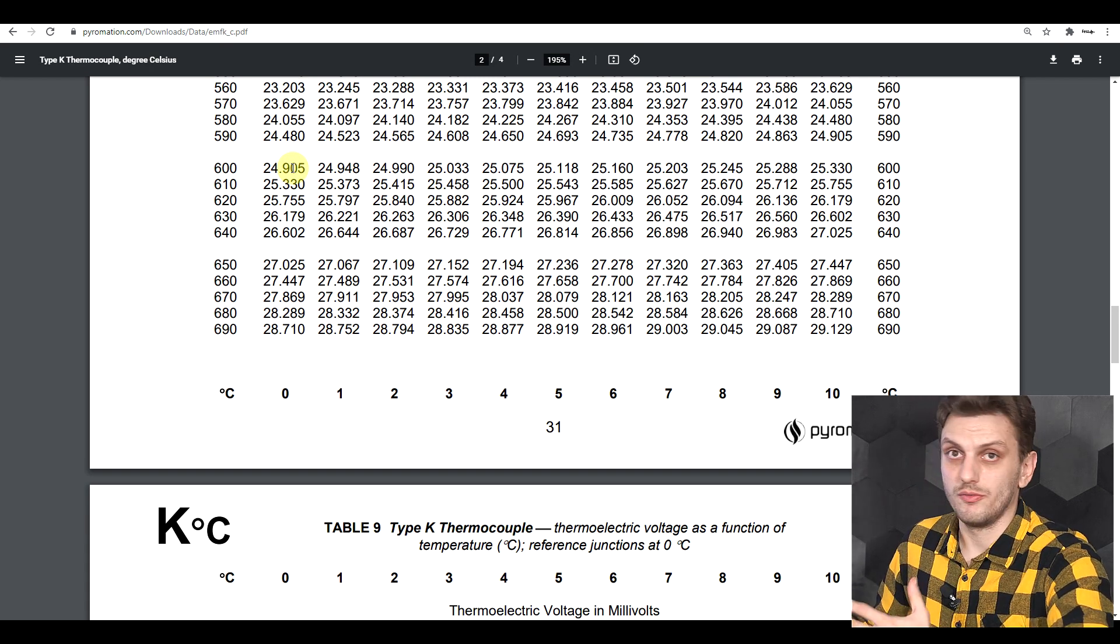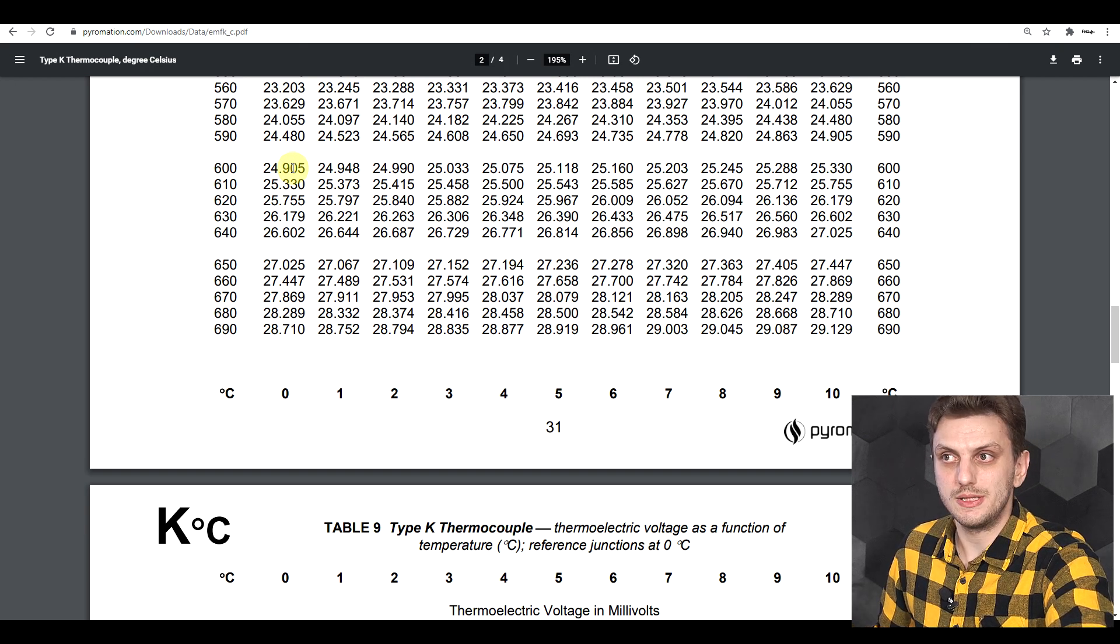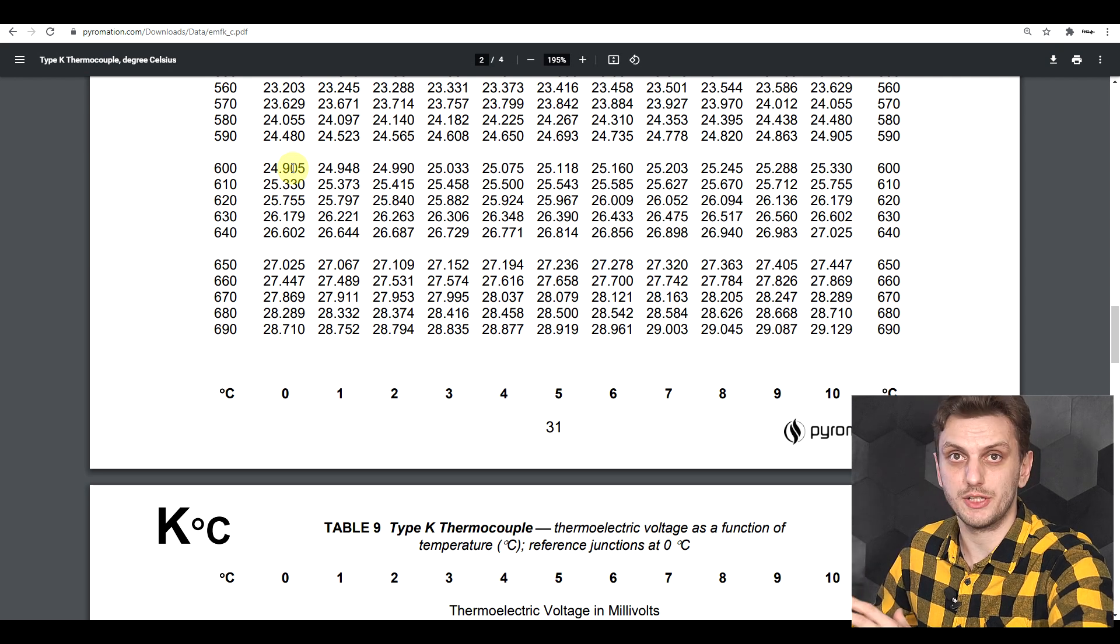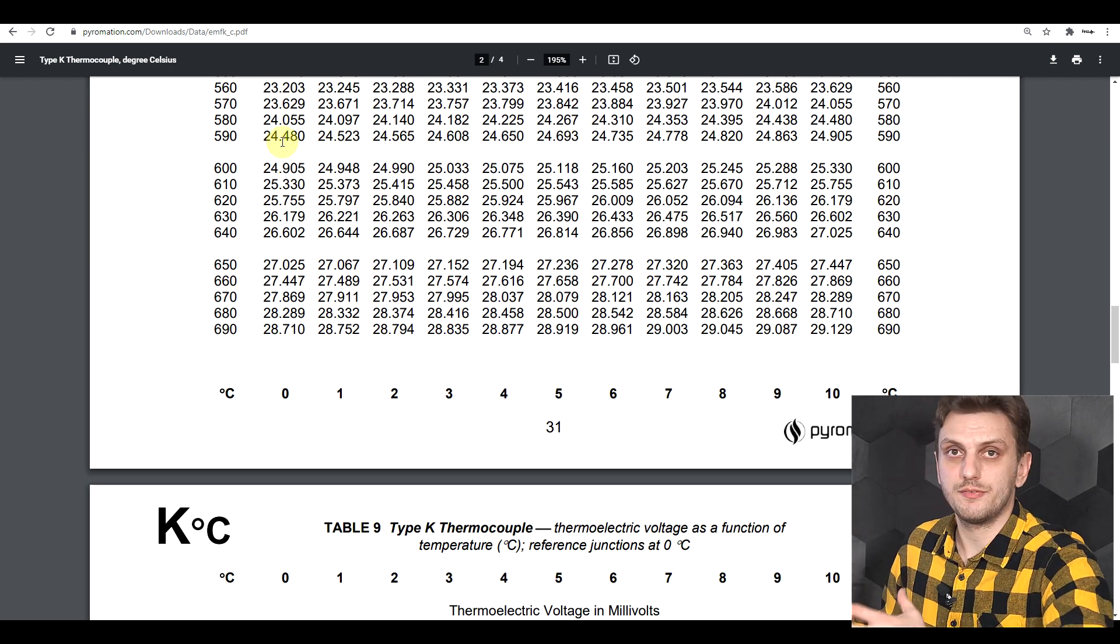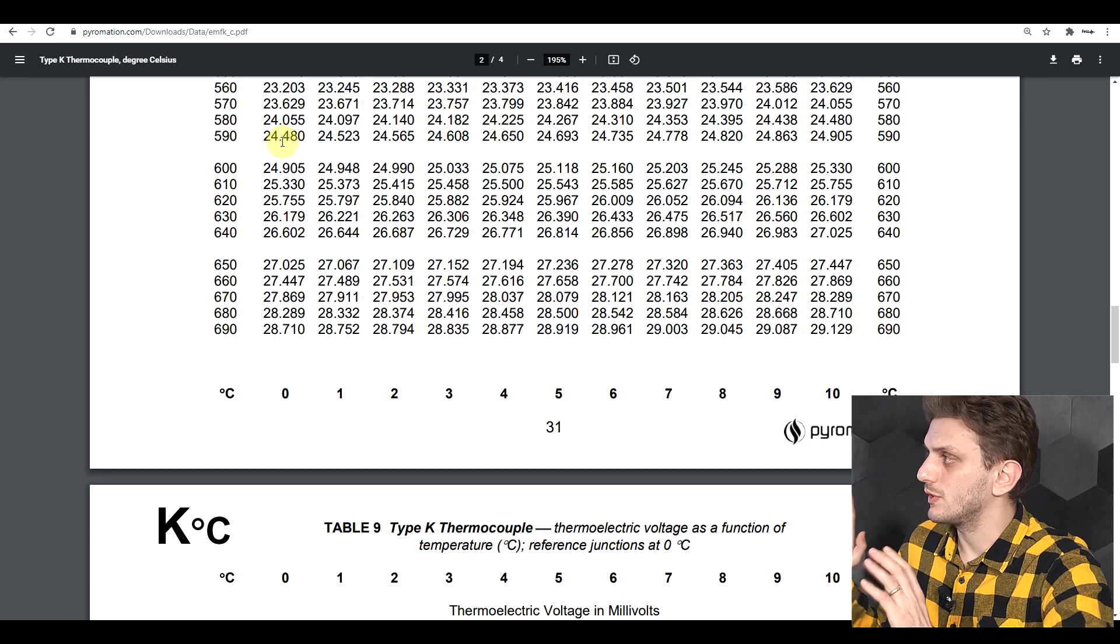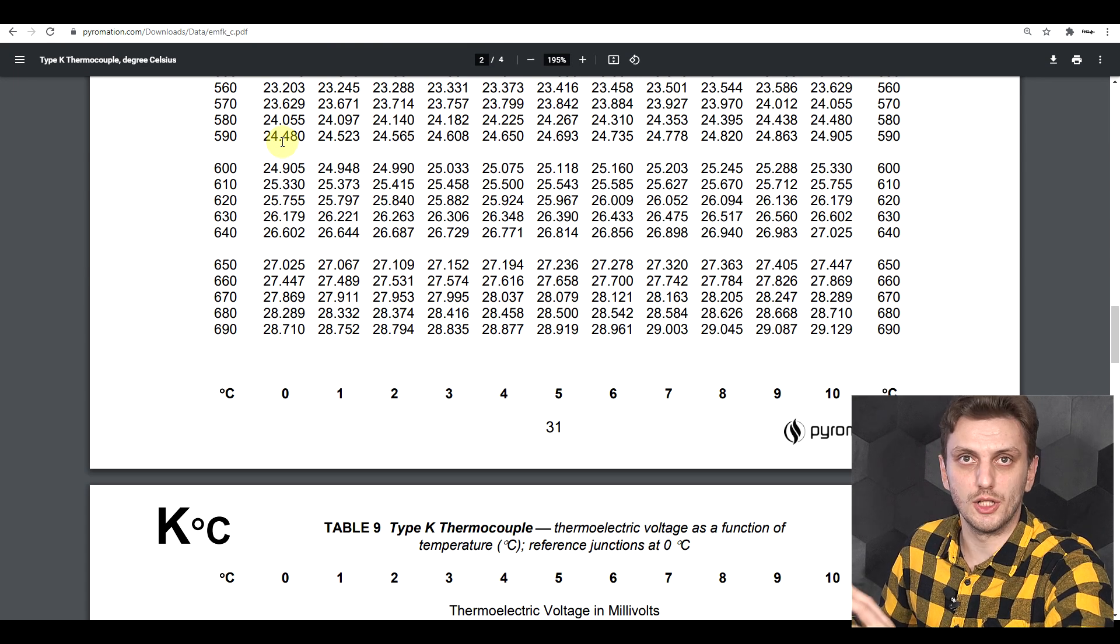Considering the small value that you're trying to measure, the amplifier should have quite low noise and quite low offset, to not interfere with the tiny values that you're trying to measure. Only afterwards you can convert this using an ADC. Direct conversion of such tiny values is usually not really practical.